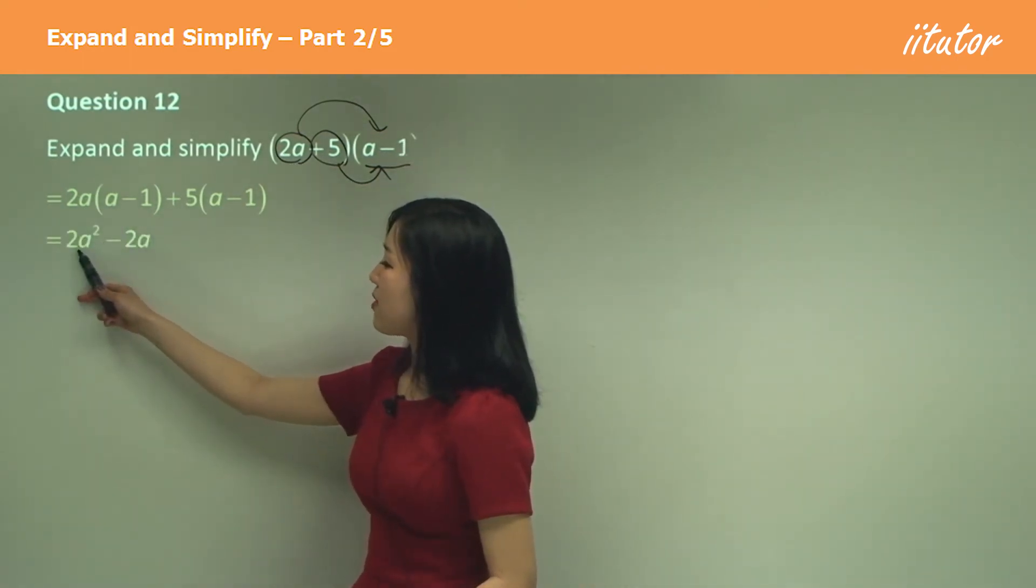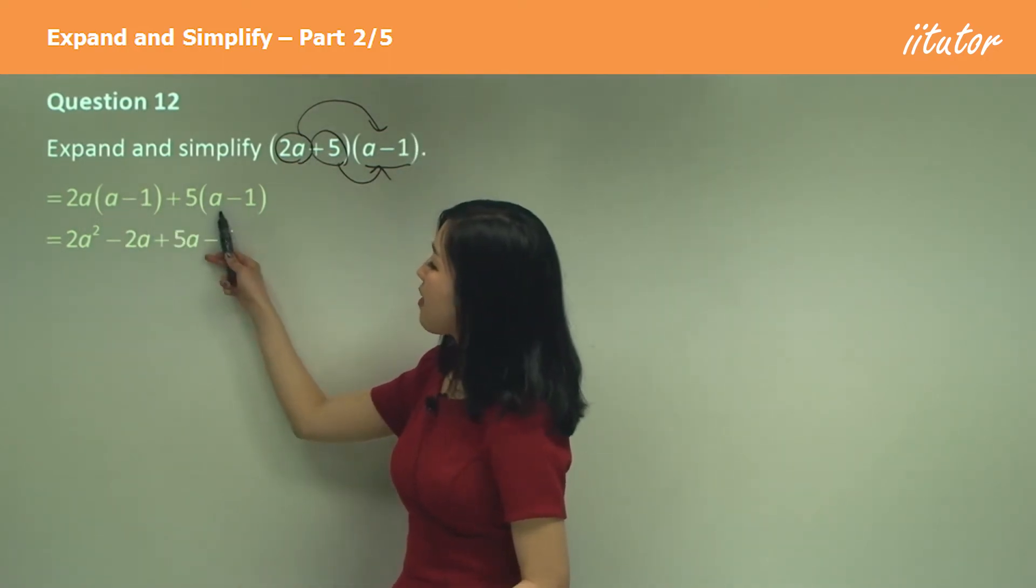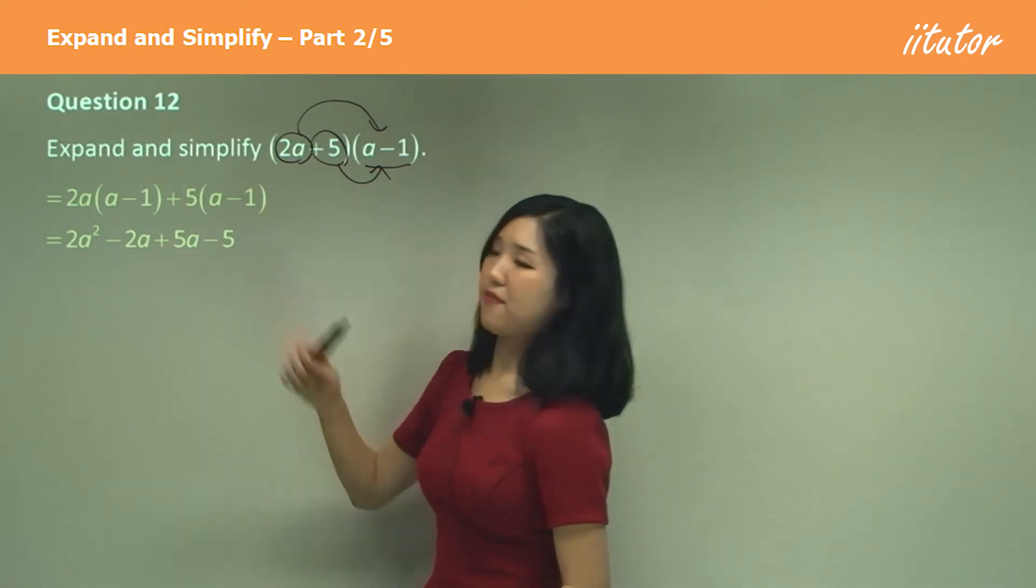So two A times A is two A squared. Two A times negative one, negative two A. And here five A minus five.